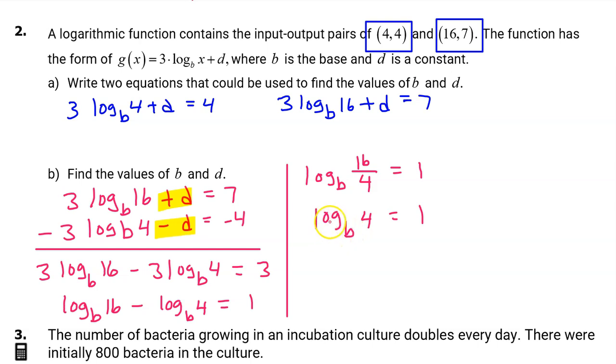Now, to get rid of the log, I can exponentiate both sides of this equation. Meaning, I can drop a base b on both sides of the equation like this. We have learned that a base b and a log base b will cancel each other out. These are inverse operations. On the left side, that will just leave the 4. On the right side, we have 4 equals b to the 1 power, which is just b. So we have found the value of b.